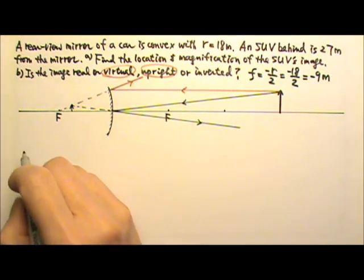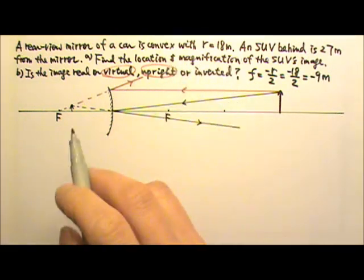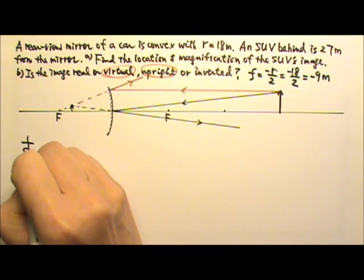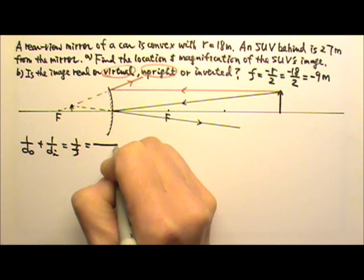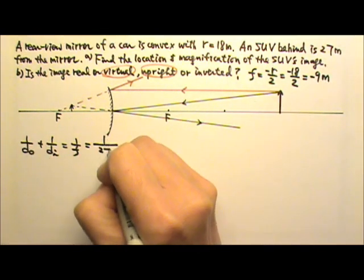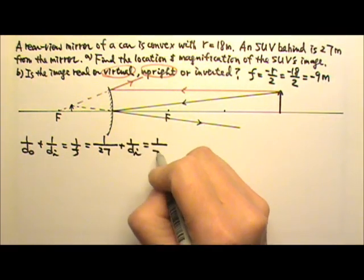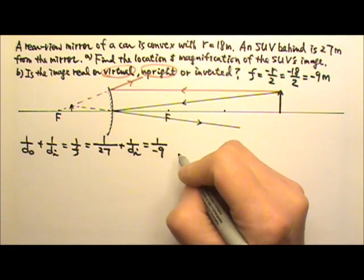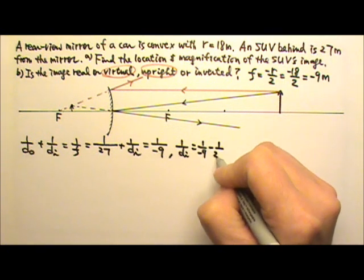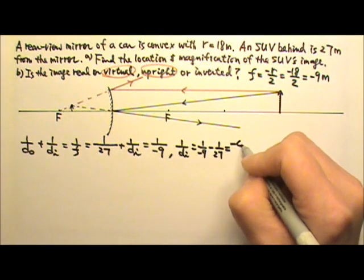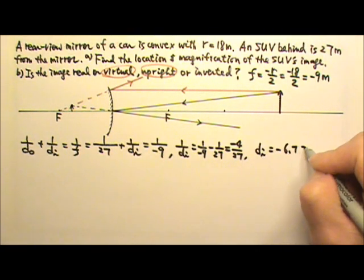Now I'm going to use the mirror equation to find the specific location of the image and the magnification. The equation is 1/DO + 1/DI = 1/F. The object distance DO is 27 meters, we're solving for DI, and the focal length F is negative 9. So 1/DI equals 1/(-9) minus 1/27.